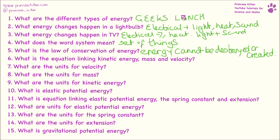What is the equation linking kinetic energy, mass and velocity? Kinetic energy equals half times mass times velocity squared. What are the units of velocity? Velocity is measured in metres per second. What are the units for mass? Mass is measured in kilograms. What are the units for energy? Energy is measured in joules.